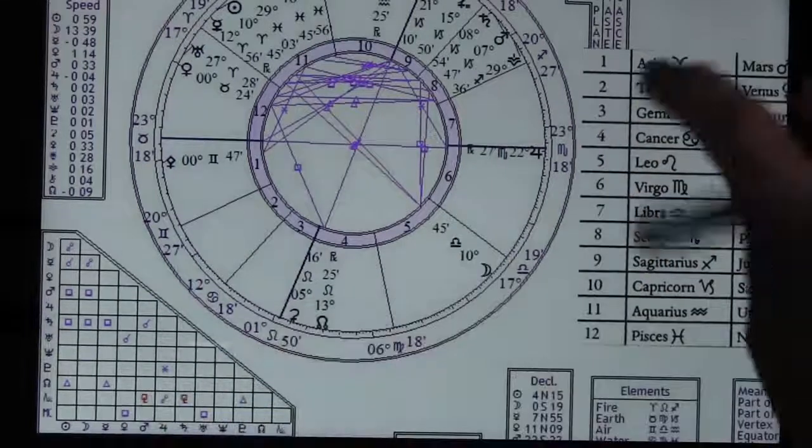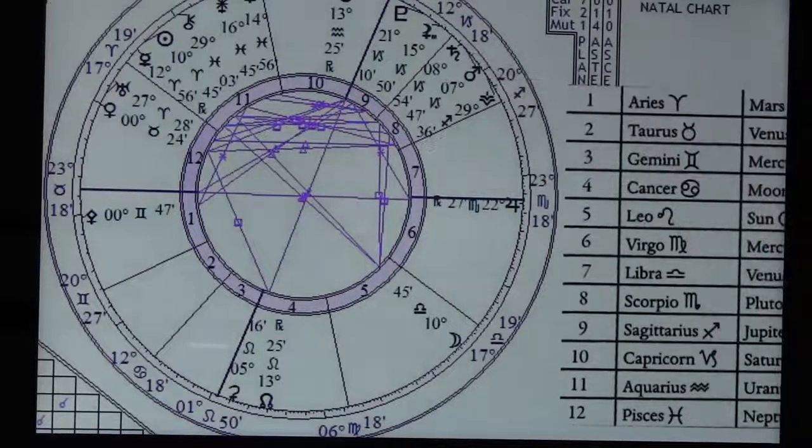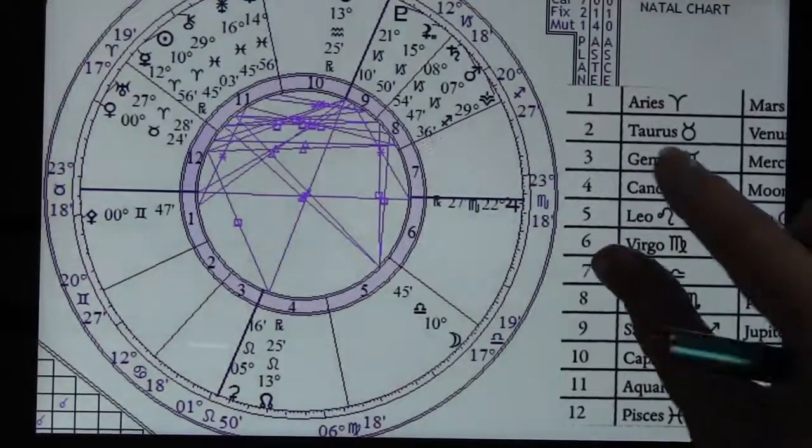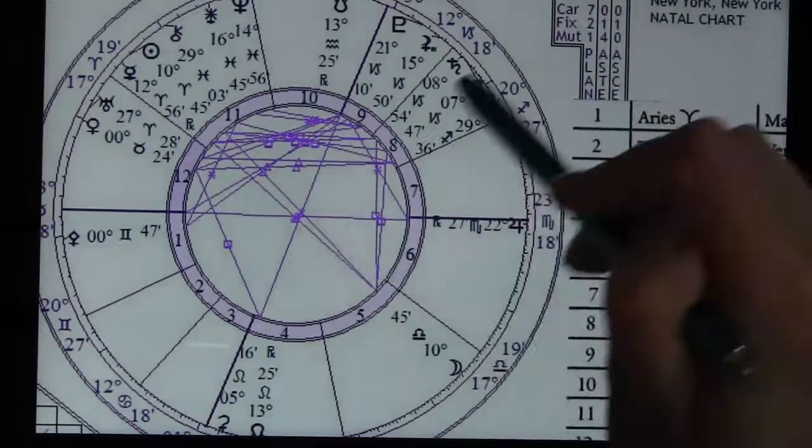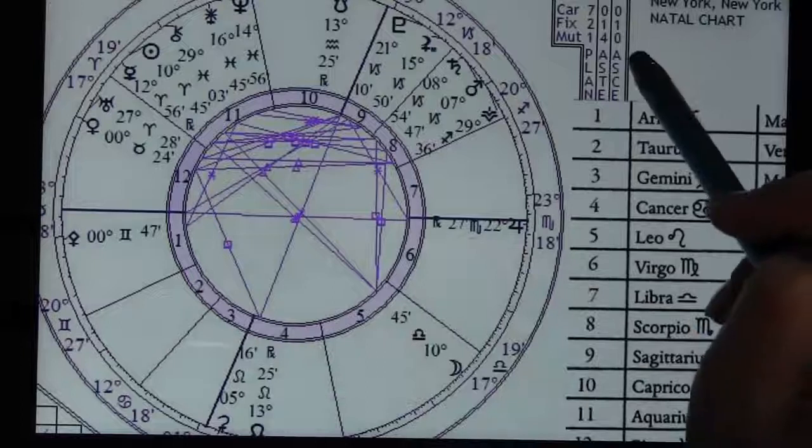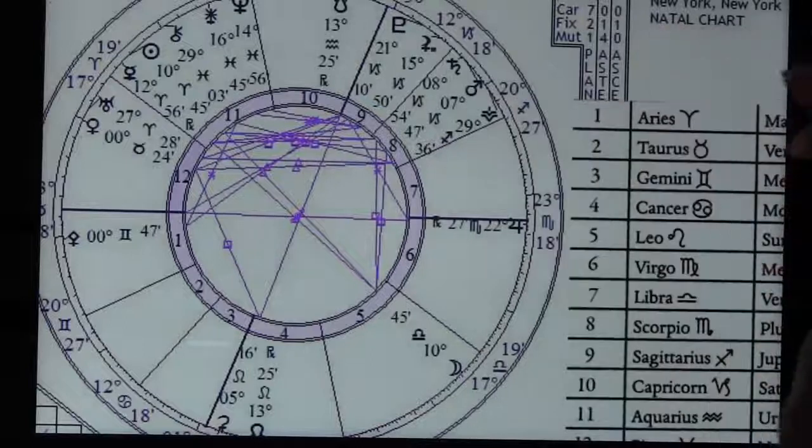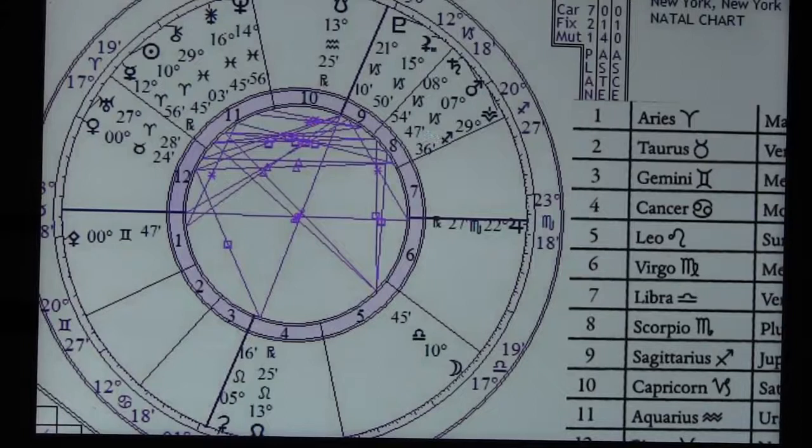We've got Saturn conjunct Mars squaring this full moon. That's some pretty heavy stuff. Saturn and Mars in Capricorn - that's like all work and no play, let's get serious, let's get down to business. Saturn's got the plan, Mars is going to hire the workers and accomplish the work.